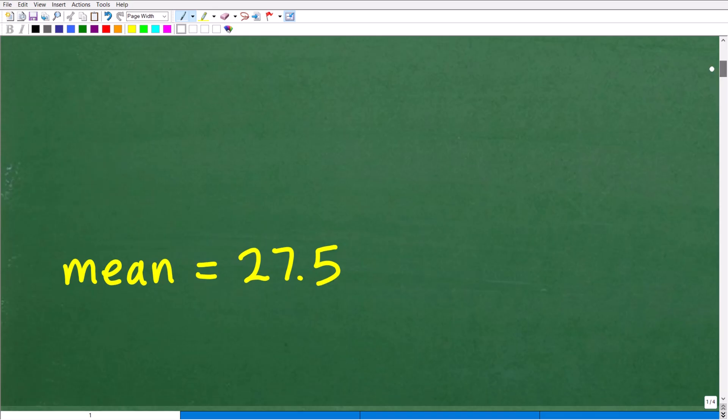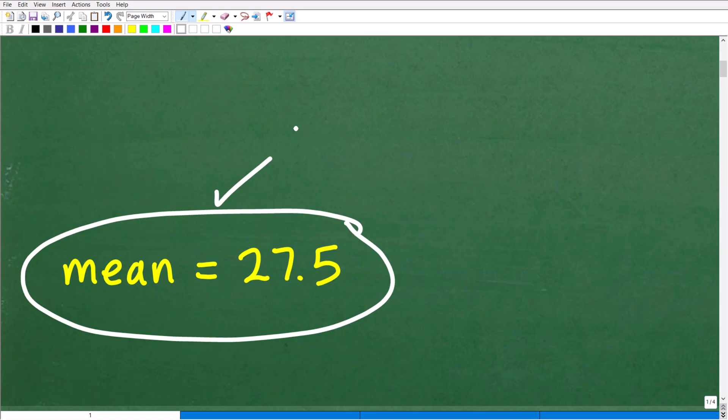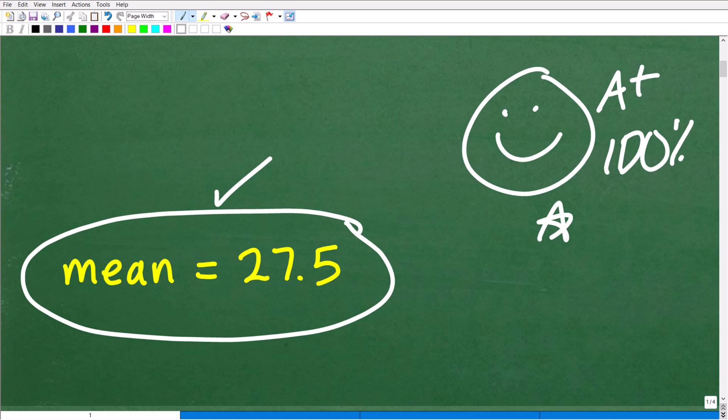The mean is 27.5. So that is the answer to this problem. So how'd you do? Hopefully you got this right. And if that is the case, let's go ahead and give you a nice little happy face and a plus, 100%, and a few stars so you can tell your friends and family that you solved a nice math problem involving the mean and the median. They'll be very impressed with that information. They'll be like, wow, you are awesome.